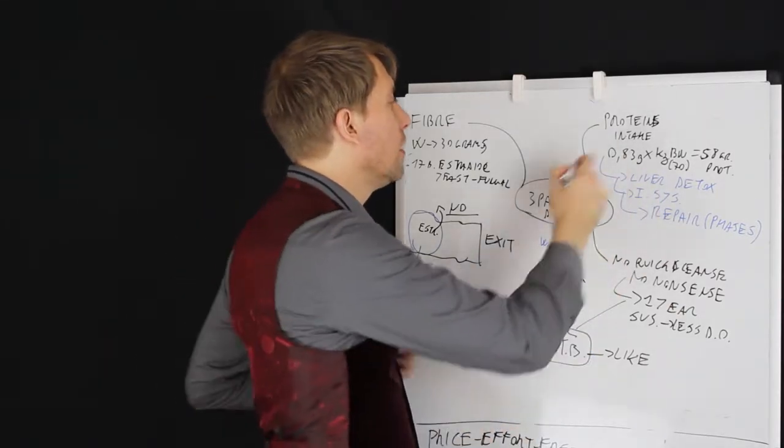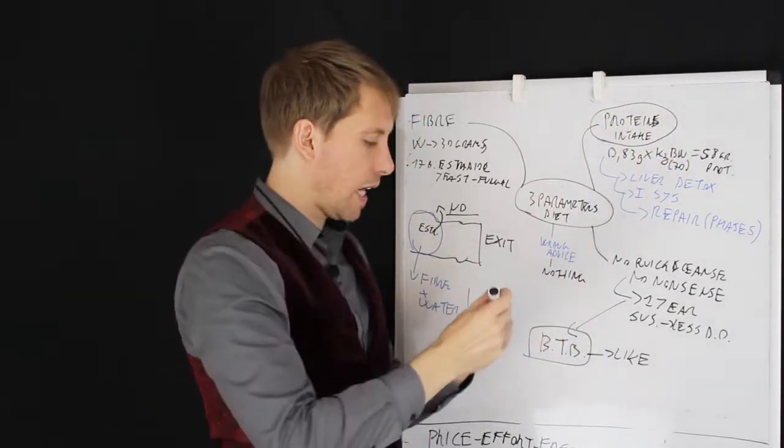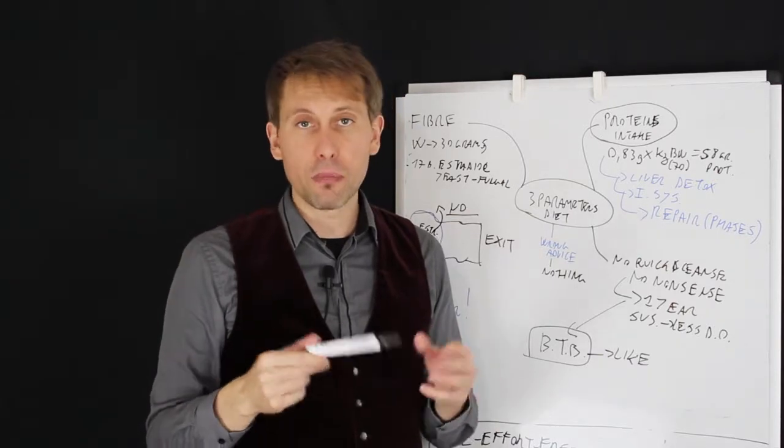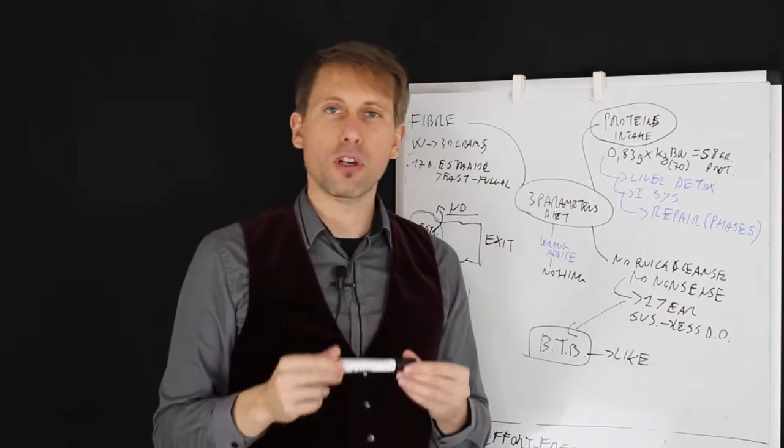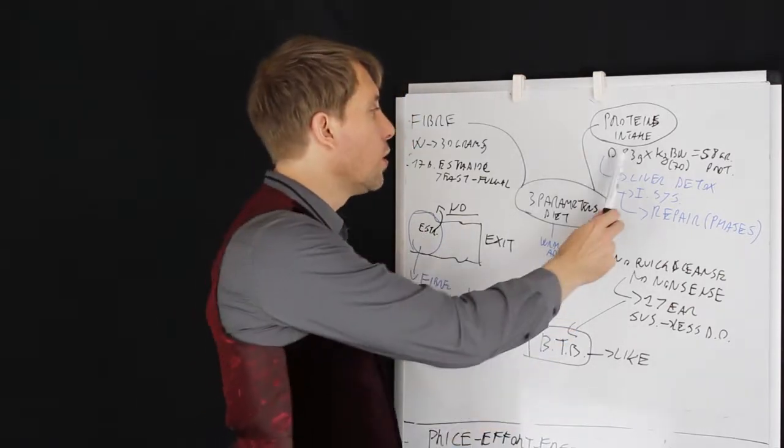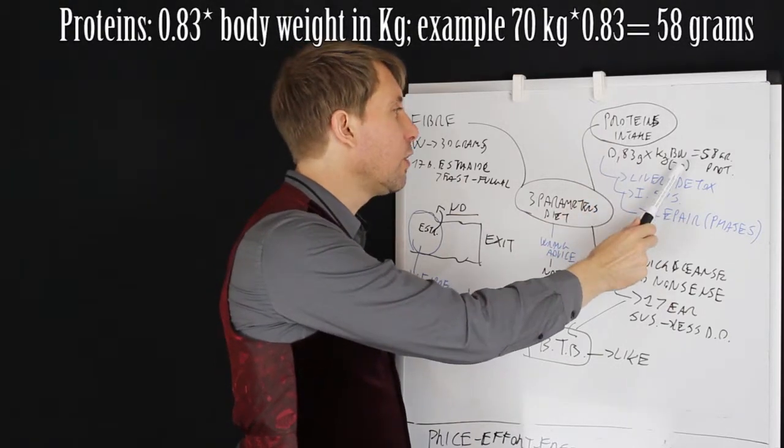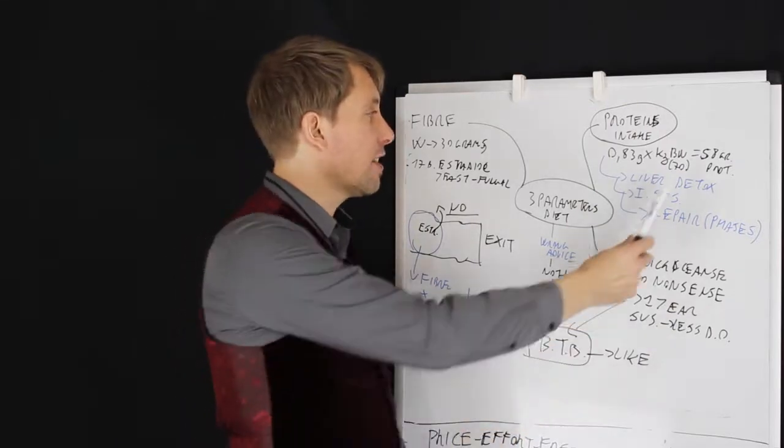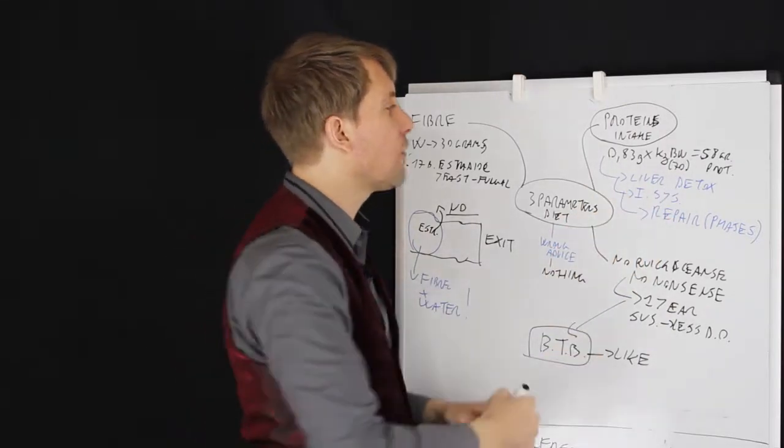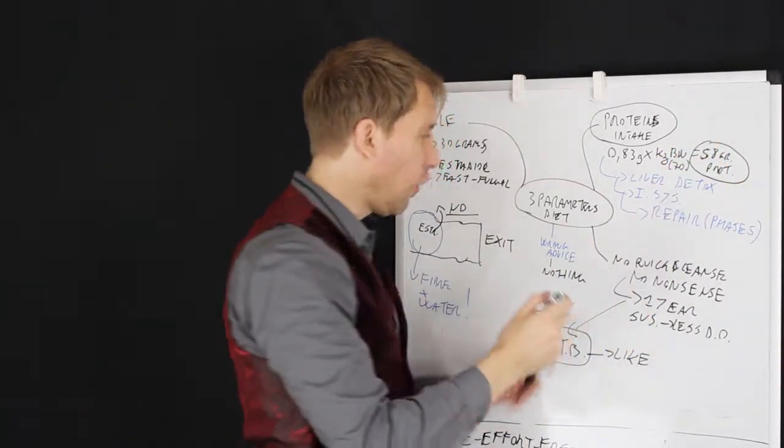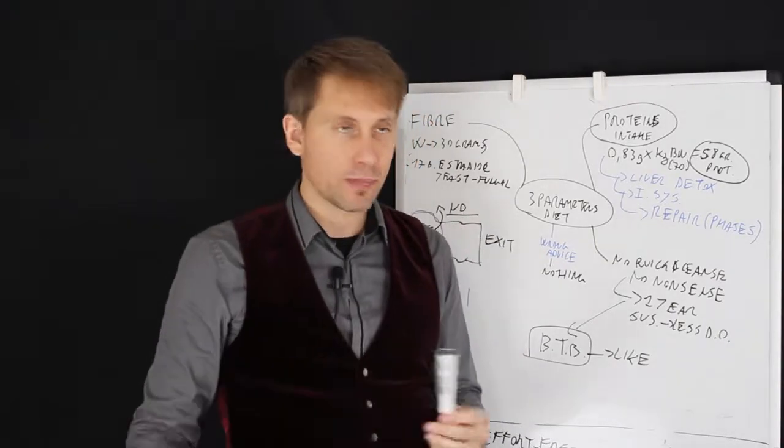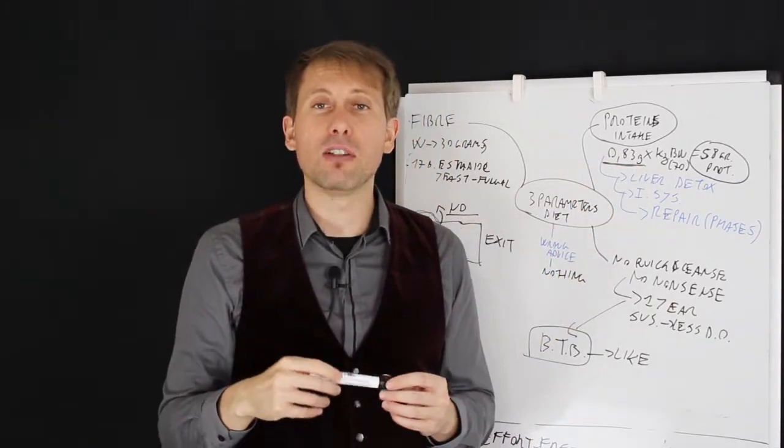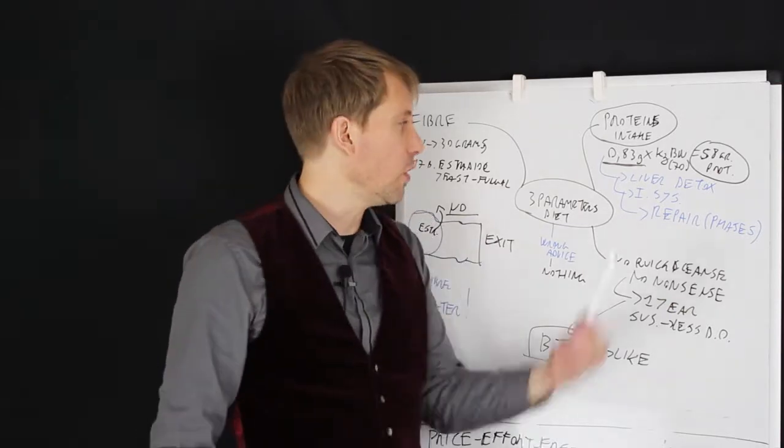Number one, you must reach the right protein intake. Now, this is a controversial topic on its own, but I'm going to give you the kind of evidence that I think is the most reliable. To calculate how many grams of protein you need to be eating every single day, you do 0.83 times your kilograms of body weight. As an example, let's say that your body weight is 70 kilos. You take 70 kilos times 0.83, which gives you an equivalent of 58 grams of protein every single day. Now, 0.83 does not change.